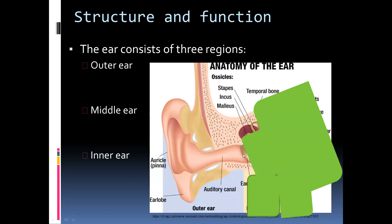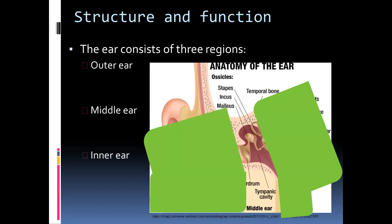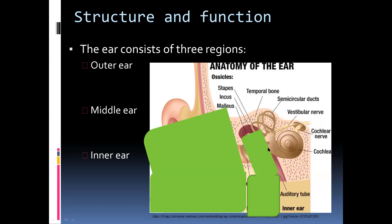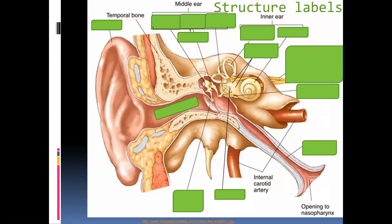After the eardrum there is another air-filled space that has three tiny bones within it, known as the middle ear. Thereafter we have a structure mainly made up of bone that is filled with fluid, and it has the structures responsible for balance as well as for hearing — that is what makes up the inner ear. So the ear is made up of three distinct regions.